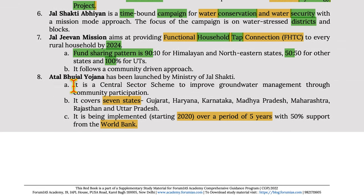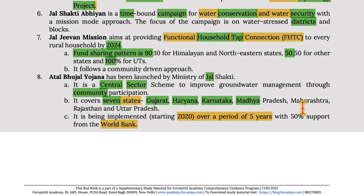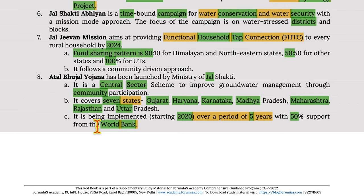Atal Bhujal Yojana has been launched by the Ministry of Jal Shakti. It is a central sector scheme to improve groundwater management through community participation, covering seven states: Gujarat, Haryana, Karnataka, Madhya Pradesh, Maharashtra, Rajasthan, and Uttar Pradesh. It has been implemented from 2020 over five years with 50% support from the World Bank.